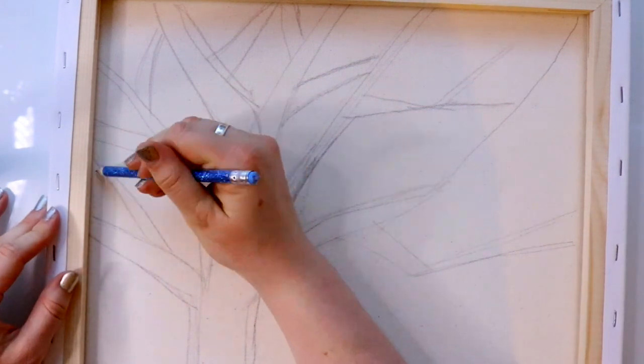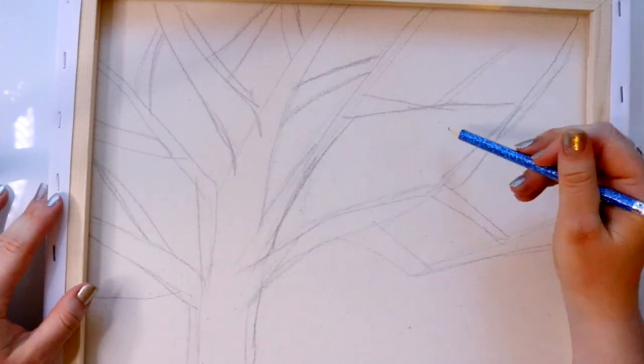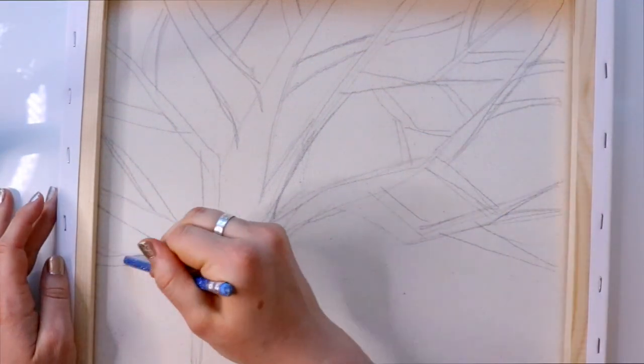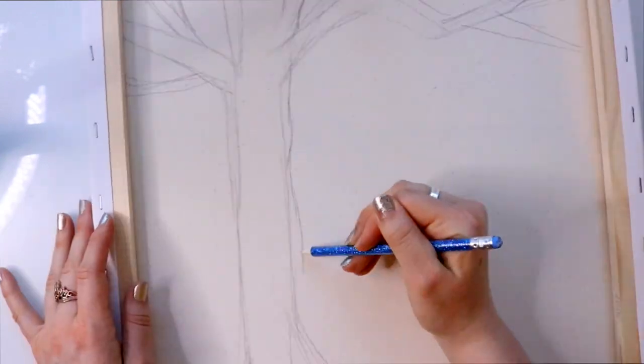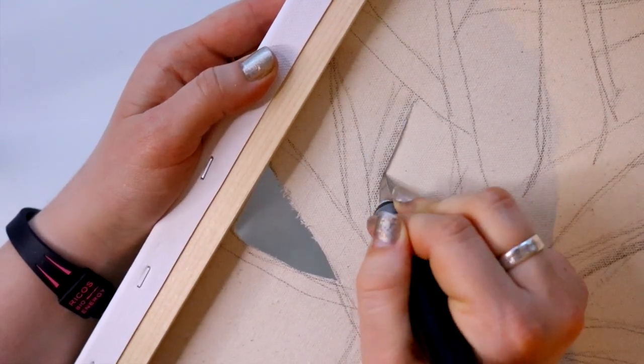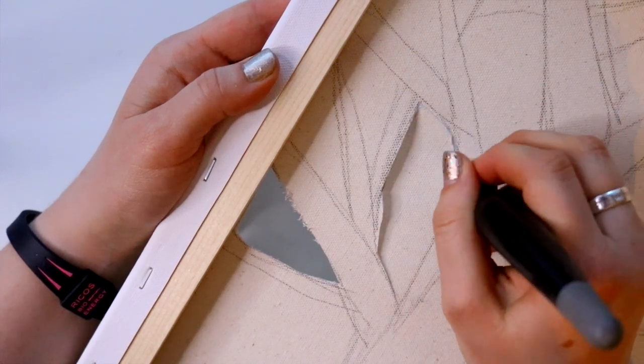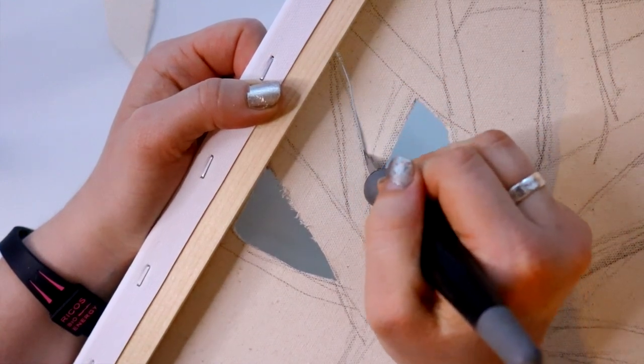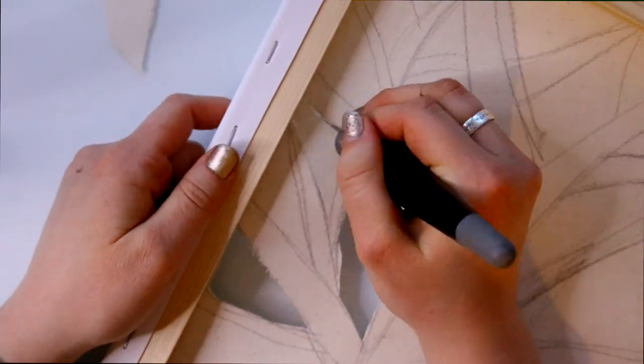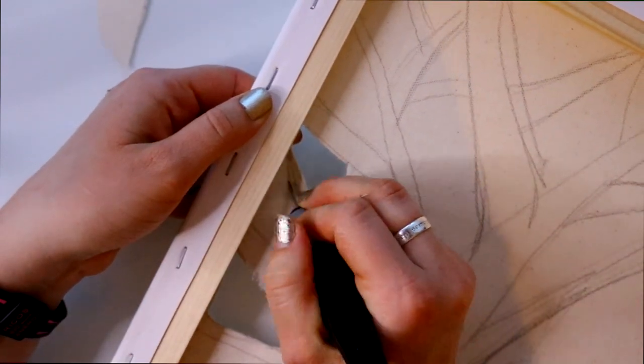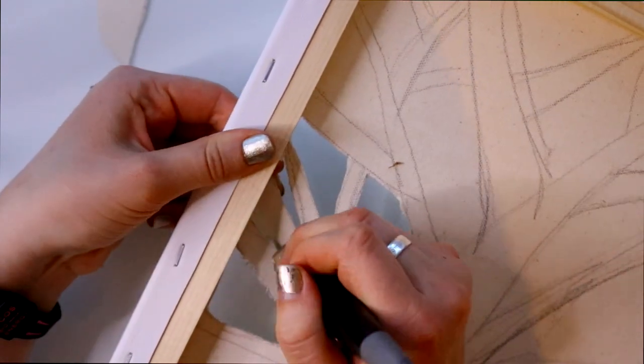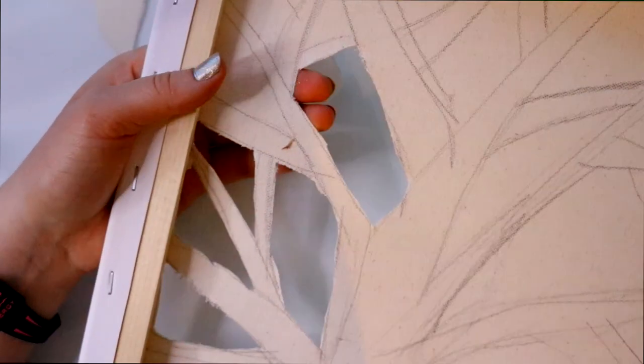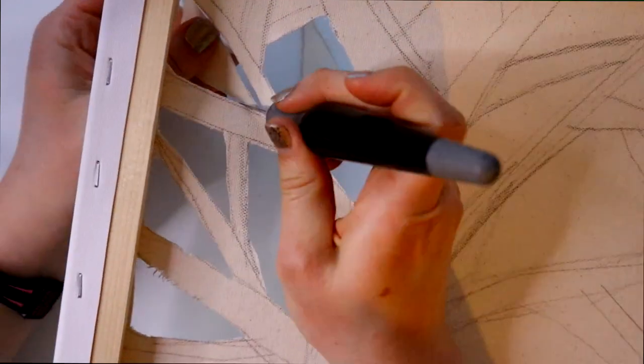So here comes the tedious part. You're going to have to be extremely patient with this and just take your time, because if you do cut off a branch, the whole thing - like if you cut a branch from the top that's connected to the front of the canvas, then the whole thing could just be ruined. Or you could try to tape it, I don't know.